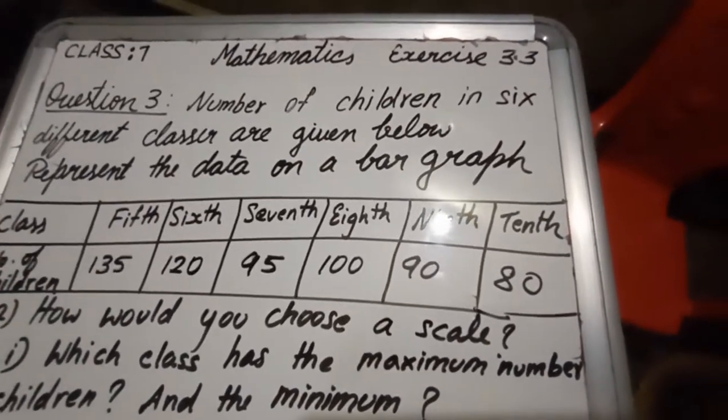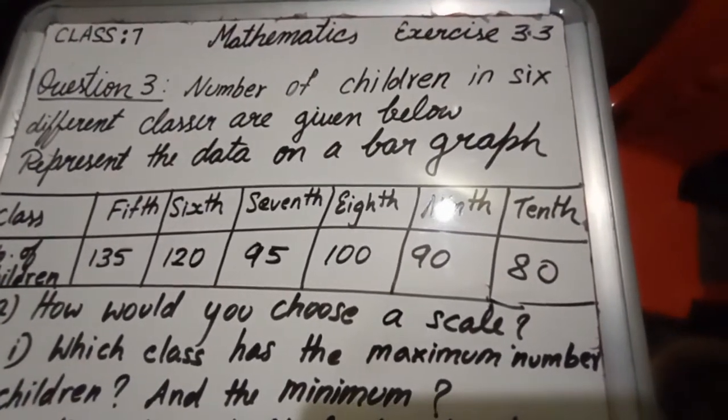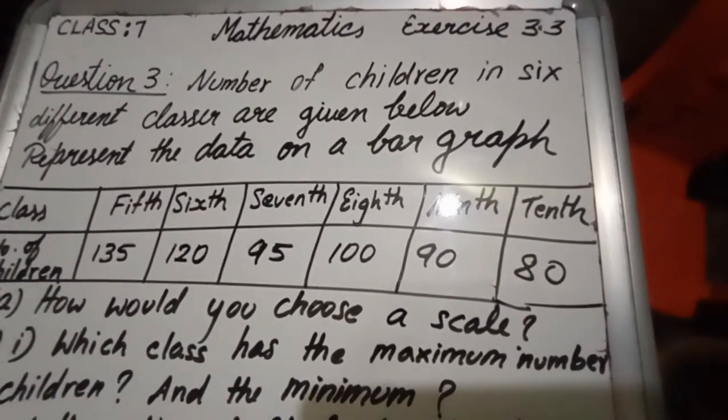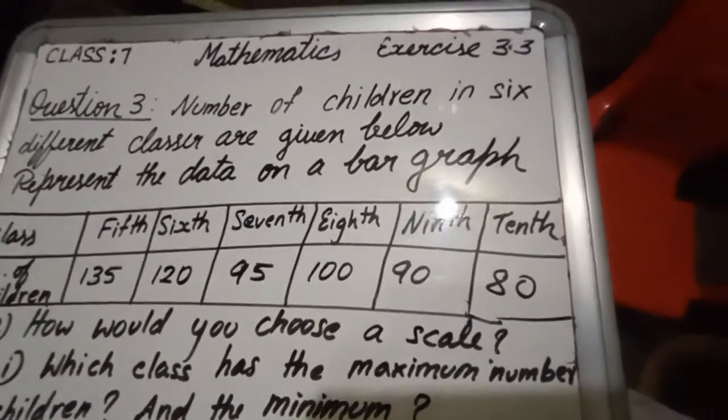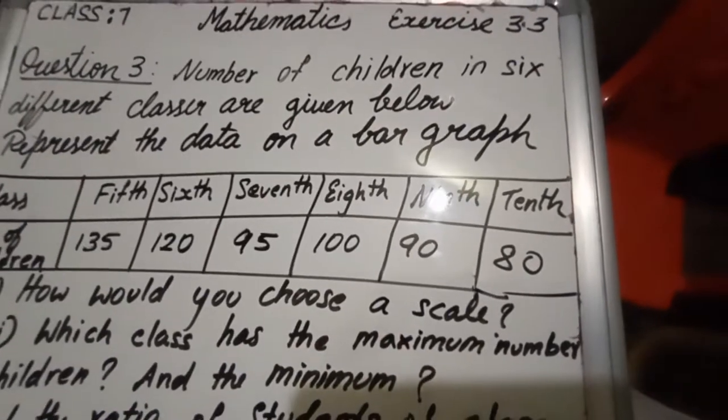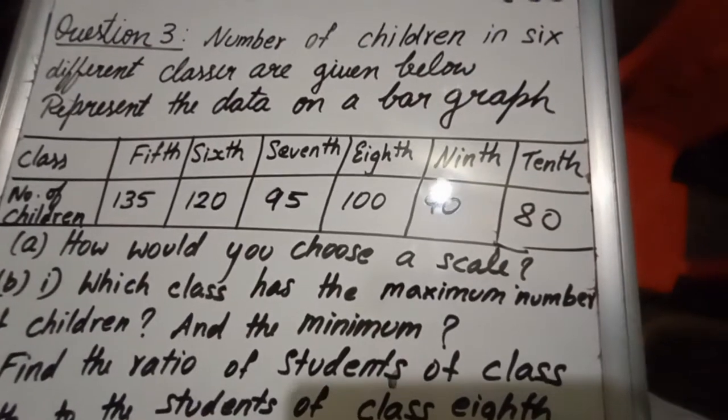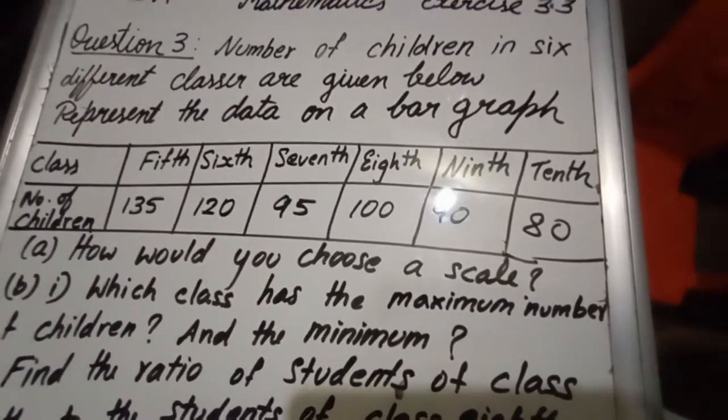Now here the values are 135, 120, 95, 100, 90, 80. According to convenience, you can choose the data. Even you can take 10, 20, 30, 40 also, or you can take 25 also. It is left to you.